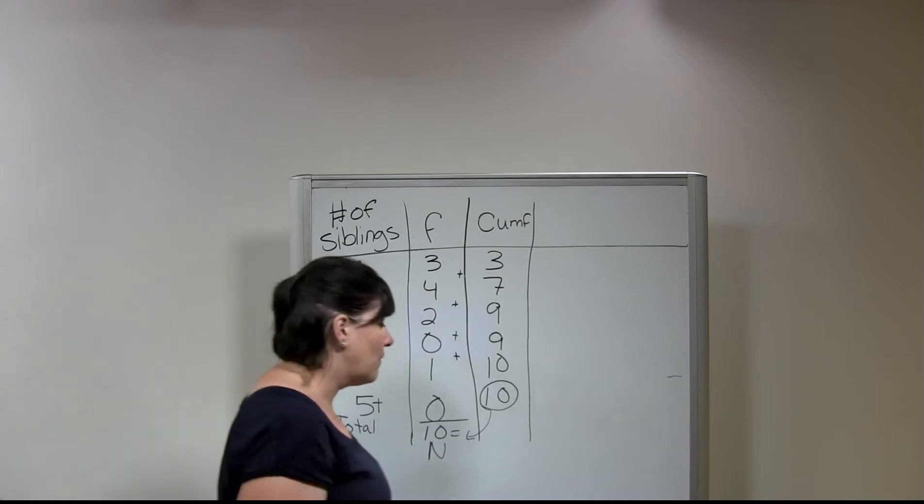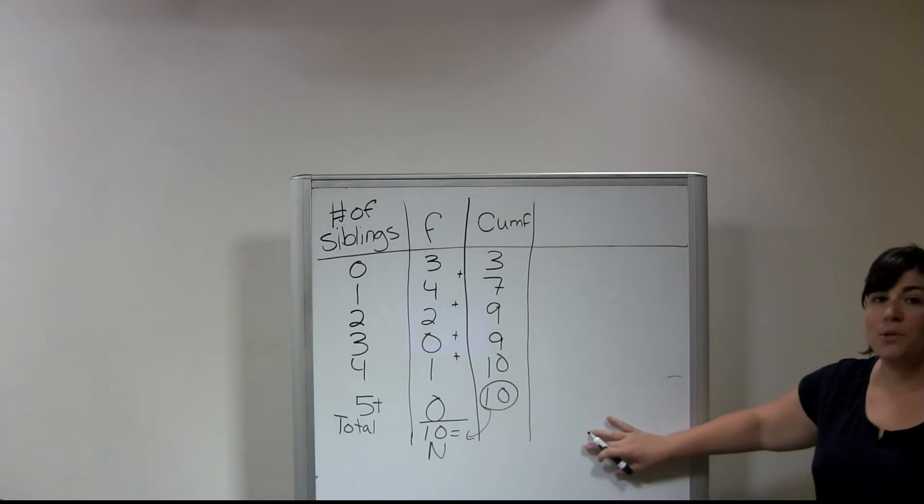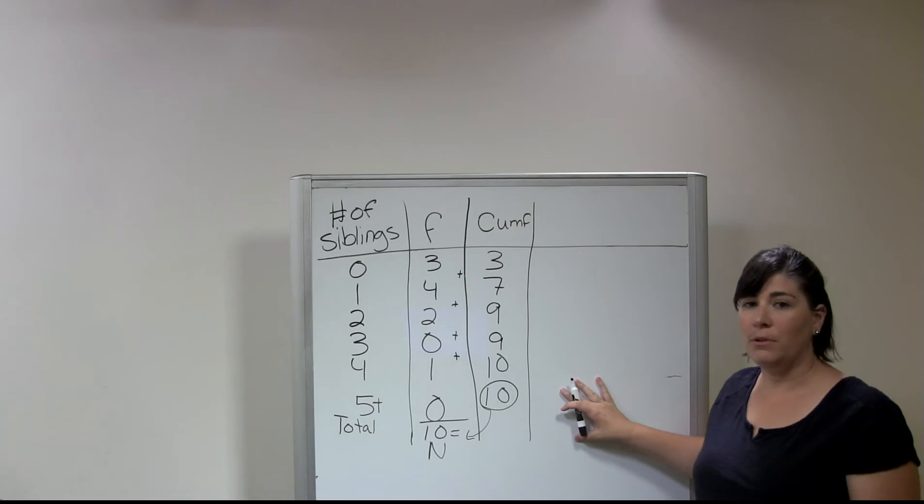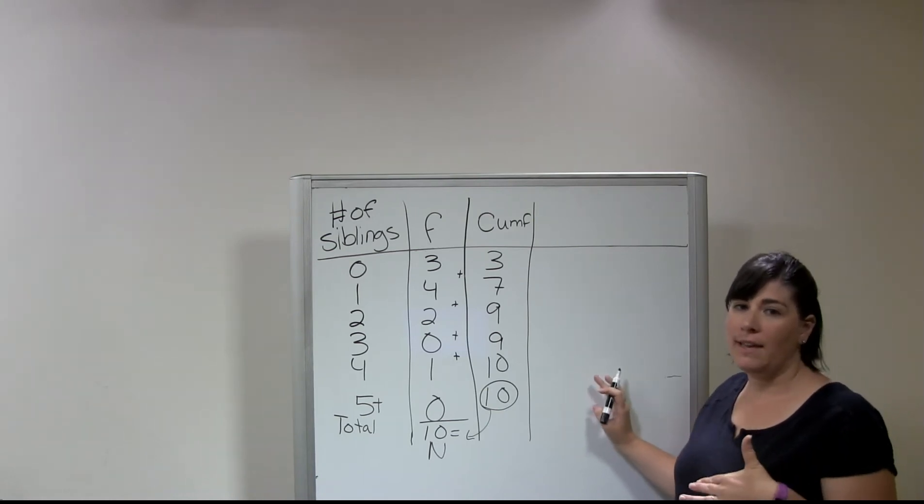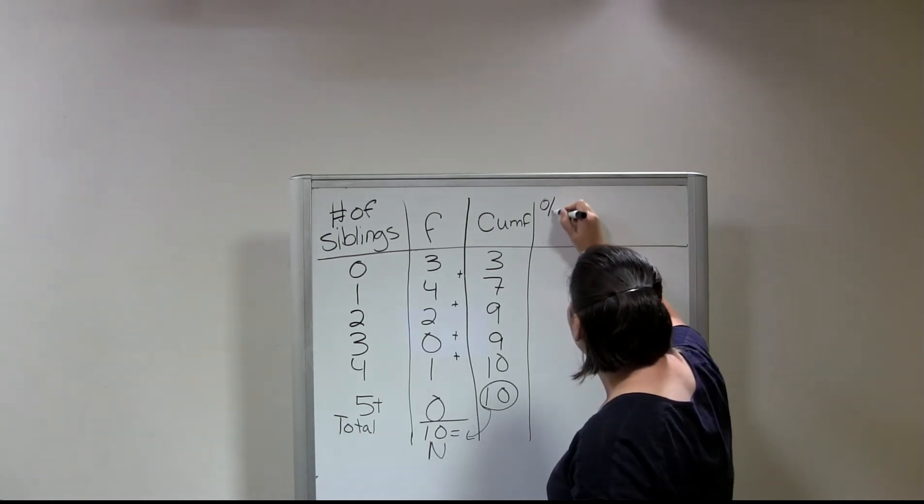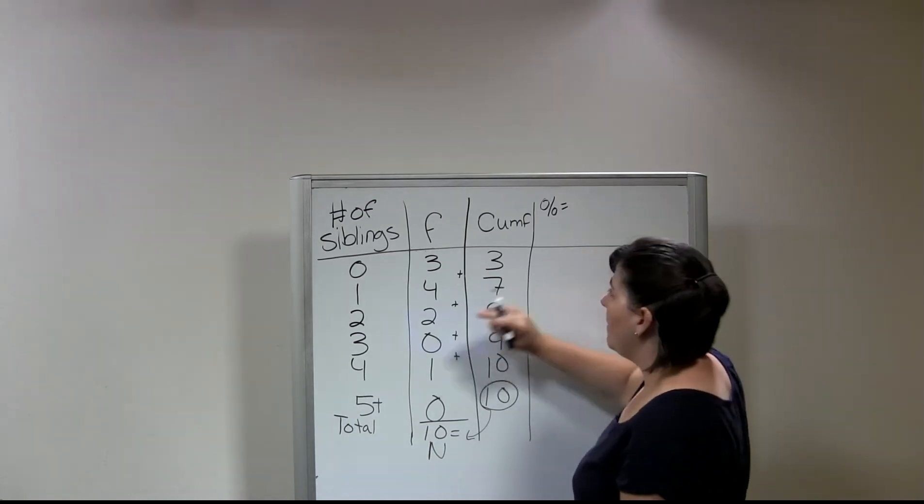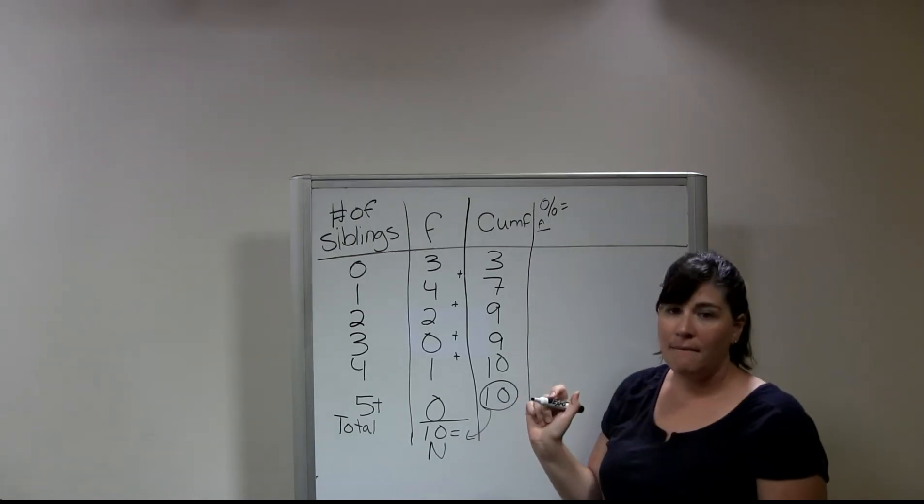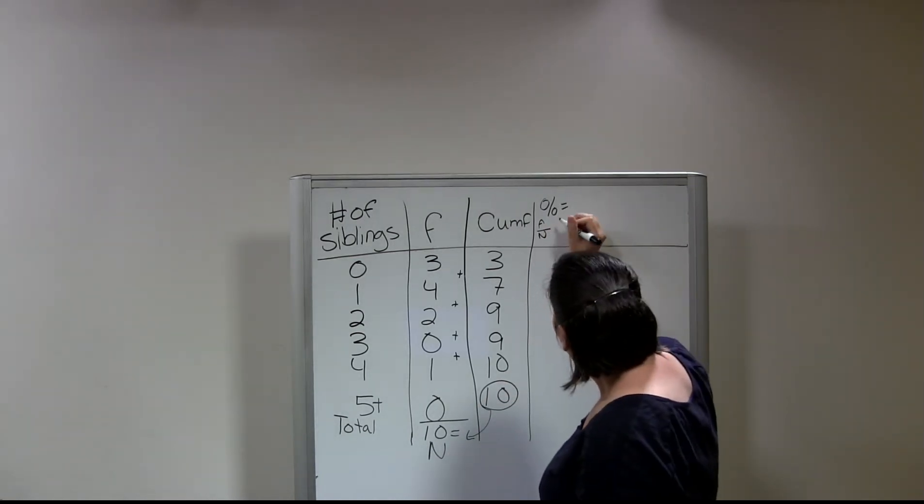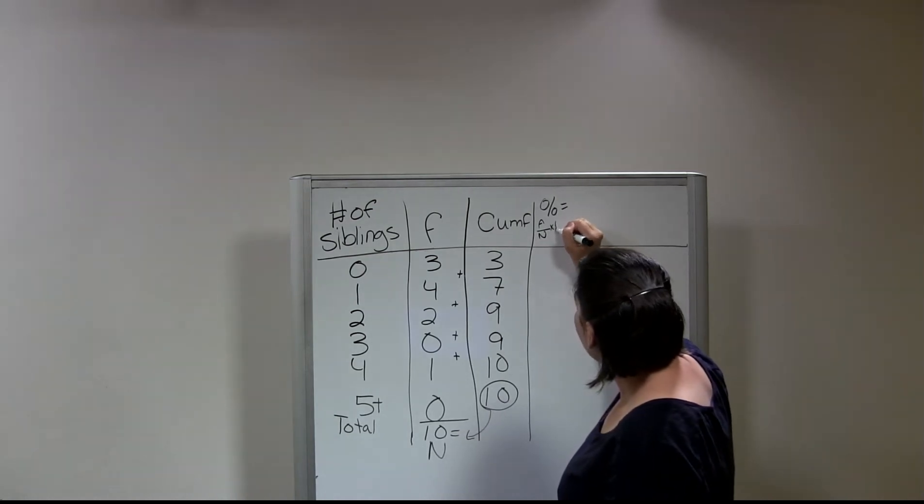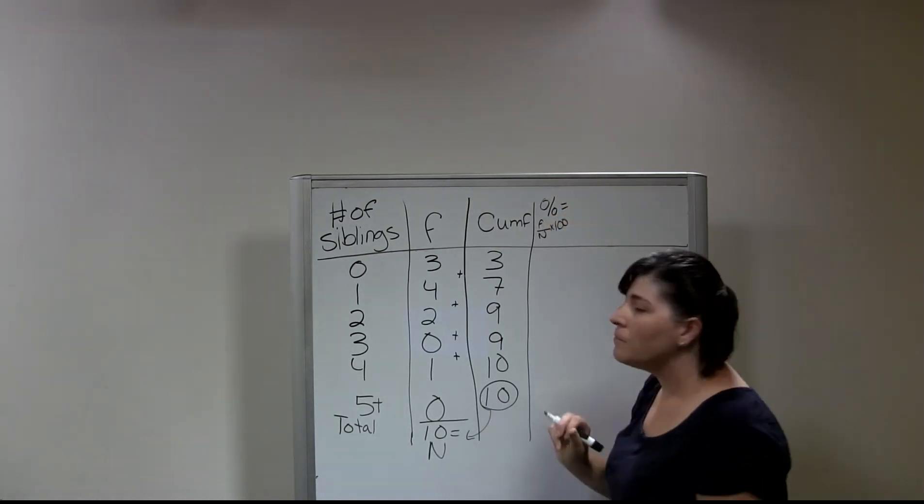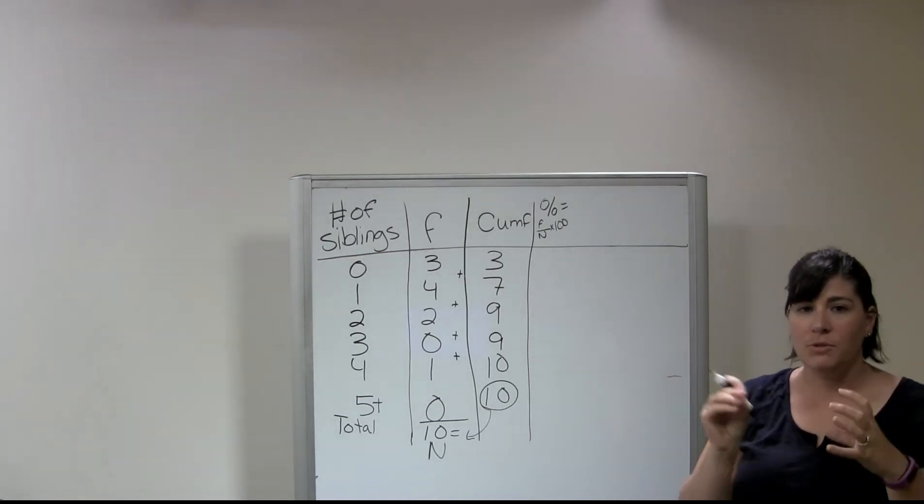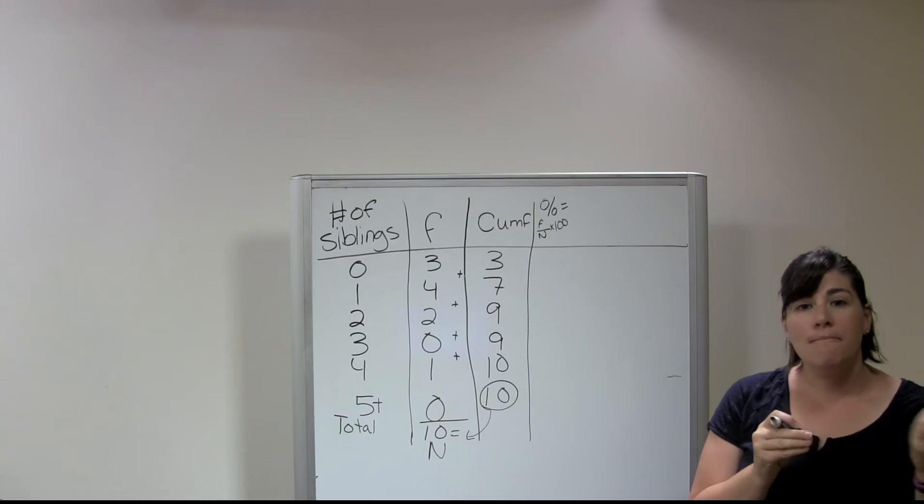So my next column is going to be a percent column. So this is going to tell me what percent of people or respondents answered in a given way. So percent is calculated by taking the frequency and dividing that by N and then multiplying all of that by 100. It's important that you multiply it by 100 so that you keep the decimals in the right place. So if you don't multiply it, you're going to have what's called a proportion, which is fine. Proportions are interesting, but percentages are easier for most people to understand.